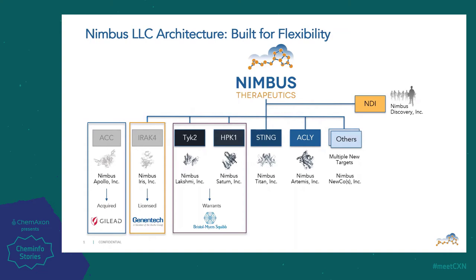Nimbus is a virtual biotech company located in Cambridge, Massachusetts. Our areas of focus are oncology, immunology, and metabolism. In this diagram you can see Nimbus's unique LLC architecture where there are multiple targets in their own subsidiaries or C-Corps under the parent LLC company. This allows Nimbus scientists to develop IND candidates for transaction without impacting the employees or the programs within.